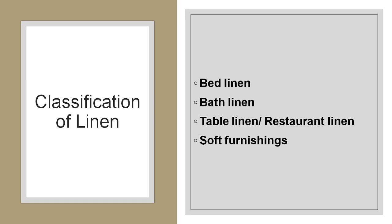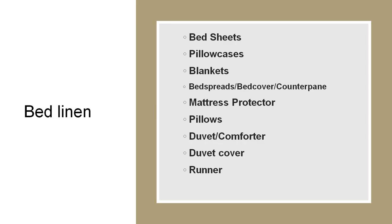The hotel linen is classified as bed linen, bath linen, table or restaurant linen, and soft furnishings. The bed linen includes bedsheets and pillowcases, blankets, bedspreads, mattress protector, pillows, duvets or comforters, duvet covers, and runners.